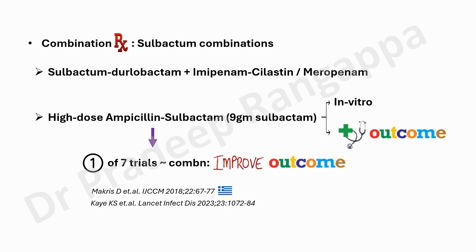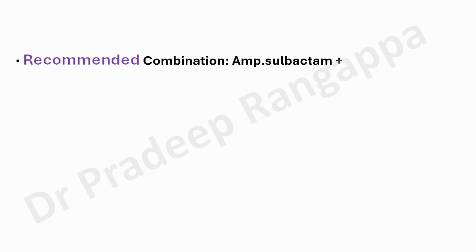Whatever you use, the sulbactam dose has to be more than six grams, up to nine grams as suggested. Looking at the evidence, there are seven trials — in those seven trials, this combination of sulbactam with any other drug has not shown a dramatic improvement in clinical outcomes. Only one prospective cohort study published by Greek authors showed some benefit when sulbactam was used in combination.